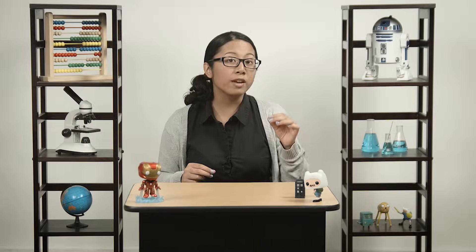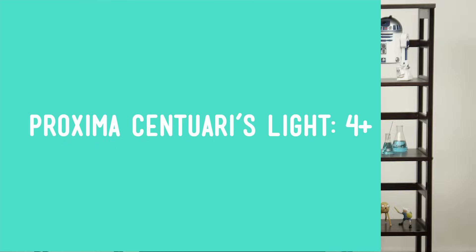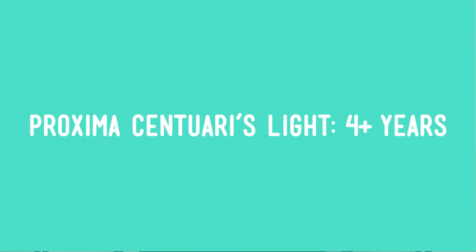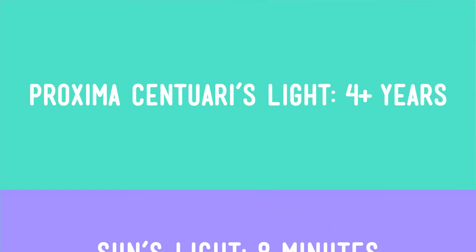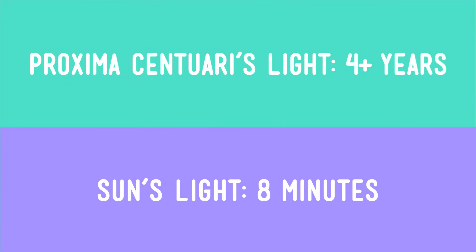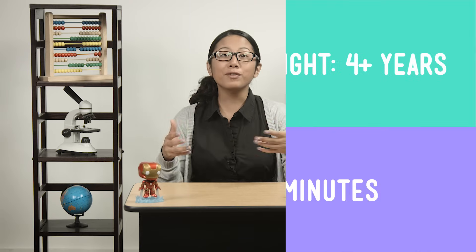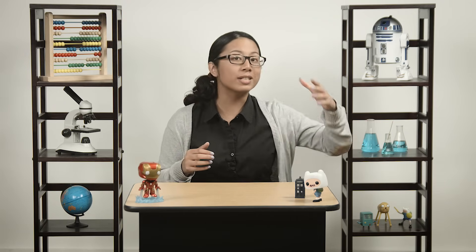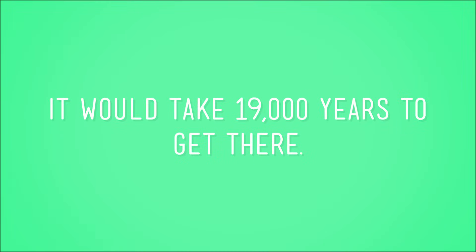That would be Proxima Centauri. It's 4.24 light years away. That means it takes light from that star four years to reach us. By comparison, it takes the sun's light eight minutes to get to Earth. If you want to visit the sun's closest star friend traveling in the fastest object humans have ever built, it would still take 19,000 years to get there.